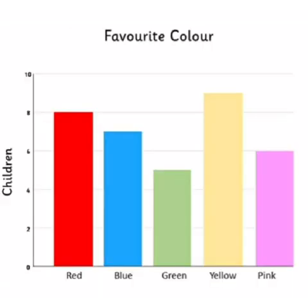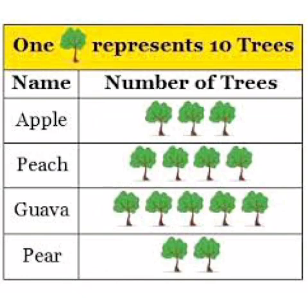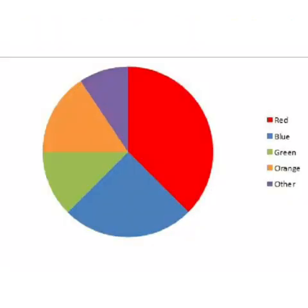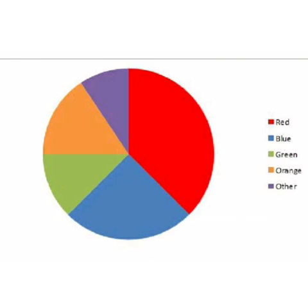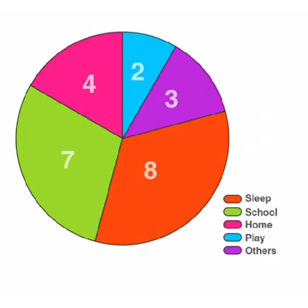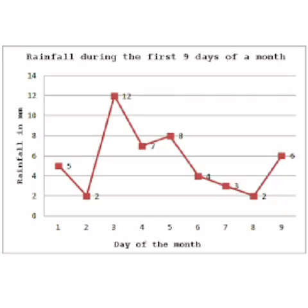Different types of data handling are bar graph, pictograph, circle graph and line graph. In your previous classes, you learned about pictograph and bar graph. In this chapter, we shall learn about circle graph and line graph.